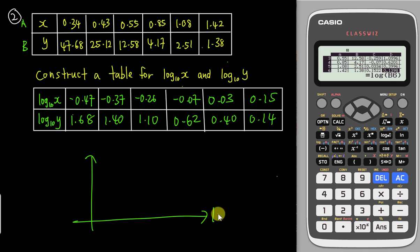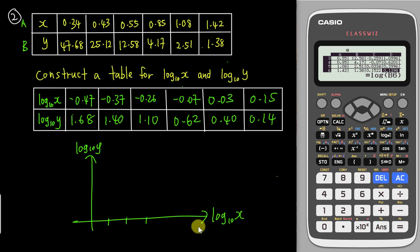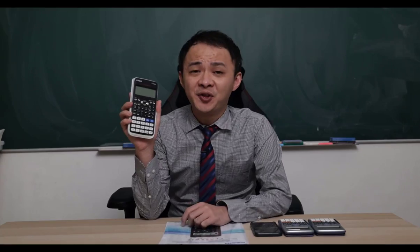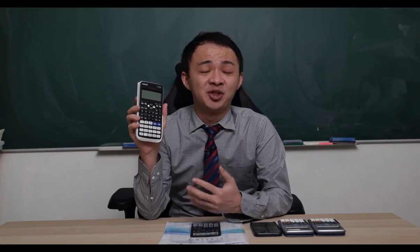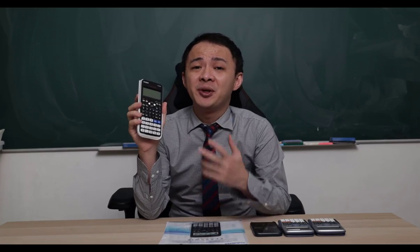Then plot the graph yourself on graph paper. Make sure the x-axis is labeled log₁₀ x and the y-axis is log₁₀ y. Follow the range according to the centimeter scale given and you should be able to get a perfect graph. That's all for this video — I hope you learned something.